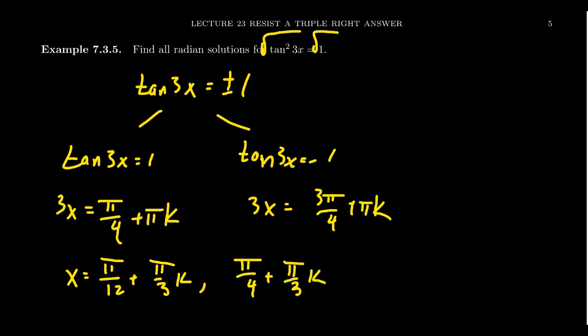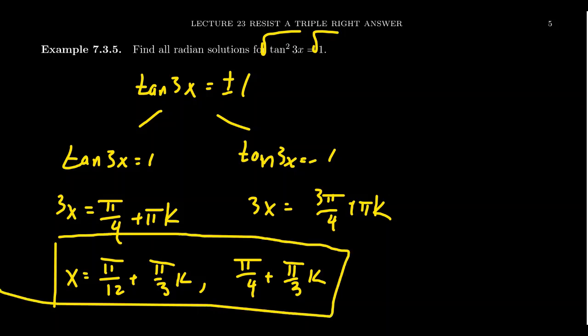Divide both sides by 3 and you'll end up with pi fourths plus pi thirds k. So I took 3 pi fourths, divide by 3. That makes it 3 pi twelfths. But I took the liberty of simplifying that just to be pi fourths right there. And so the general solution here is going to be x equals pi twelfths and pi fourths. And then you could add any multiple of pi thirds to that. And that would give you all the solutions in radian measure.